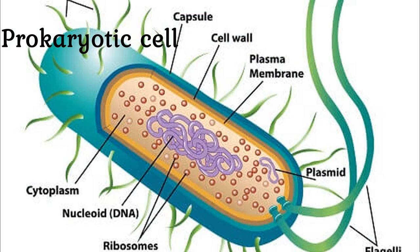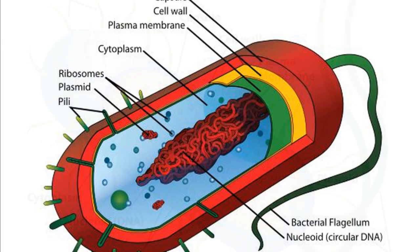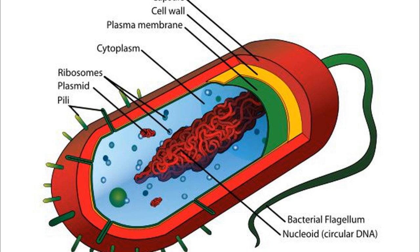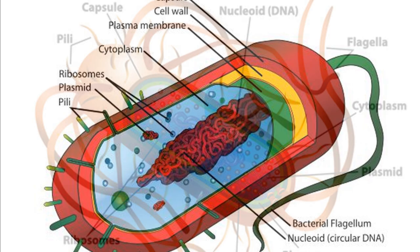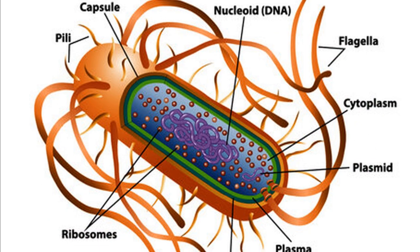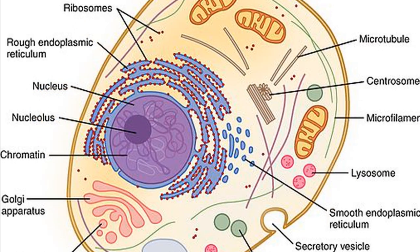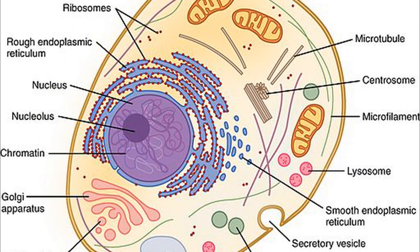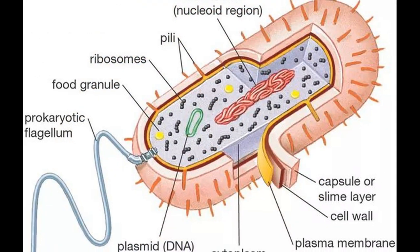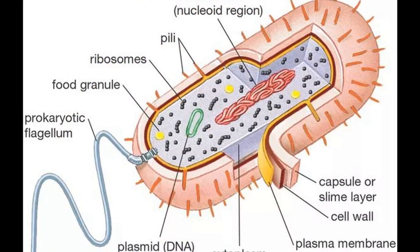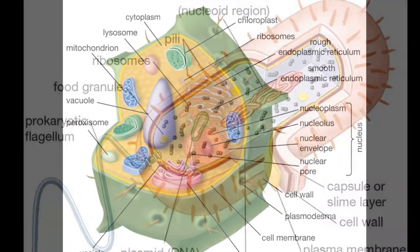Prokaryotic Cell – In lower organisms like the bacteria and blue-green algae, the nuclear membrane is absent. As such, the nuclear material is in direct contact with the cytoplasm. Such cells are called prokaryotic cells.